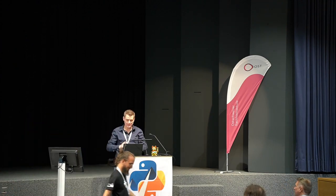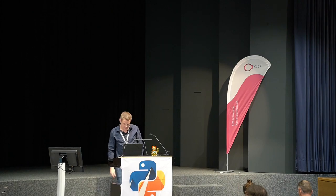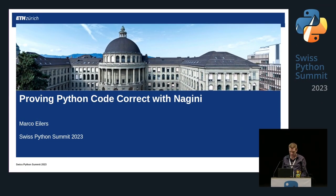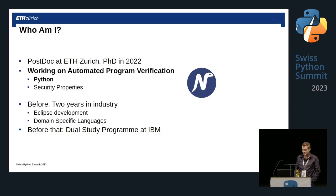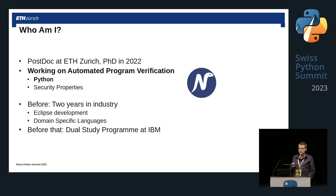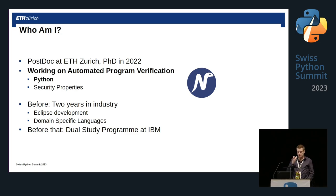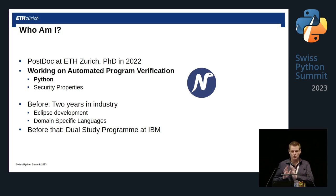I'll be talking about formal verification and how you can use it for Python code using a tool called Nagini. I'm a postdoc at ETH. I finished my PhD there last year and I've been working on automated formal verification, partly for Python, also in general for security properties. Before that, I worked in industry for a bit — in particular at IBM, doing some Eclipse development. I had some experience with Java application servers, and I can't tell you how nice it is to get to write Python code coming from there.